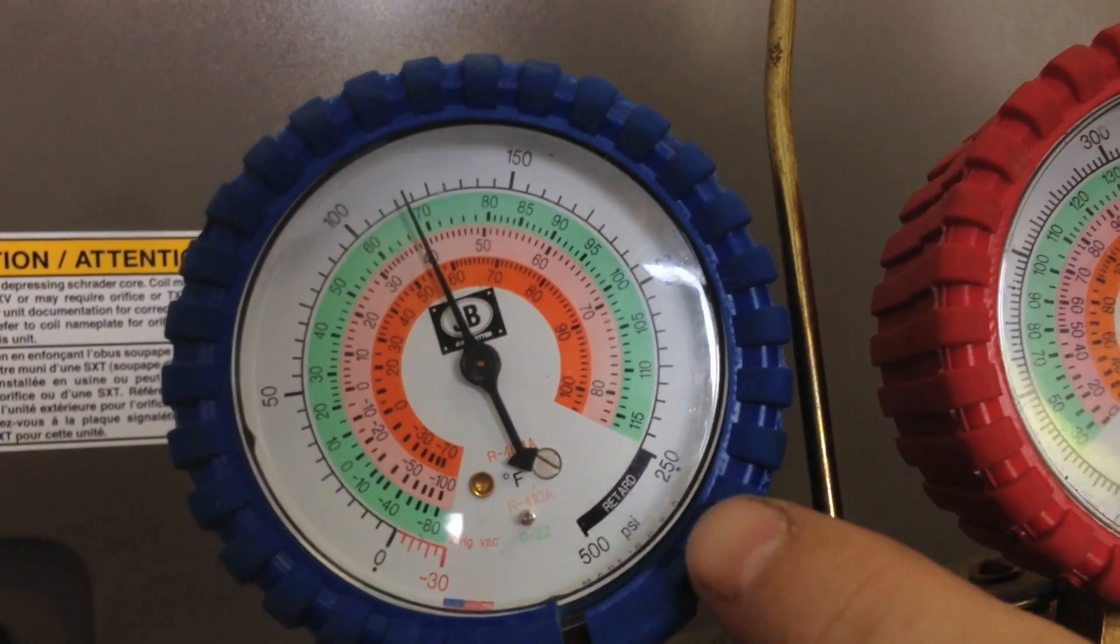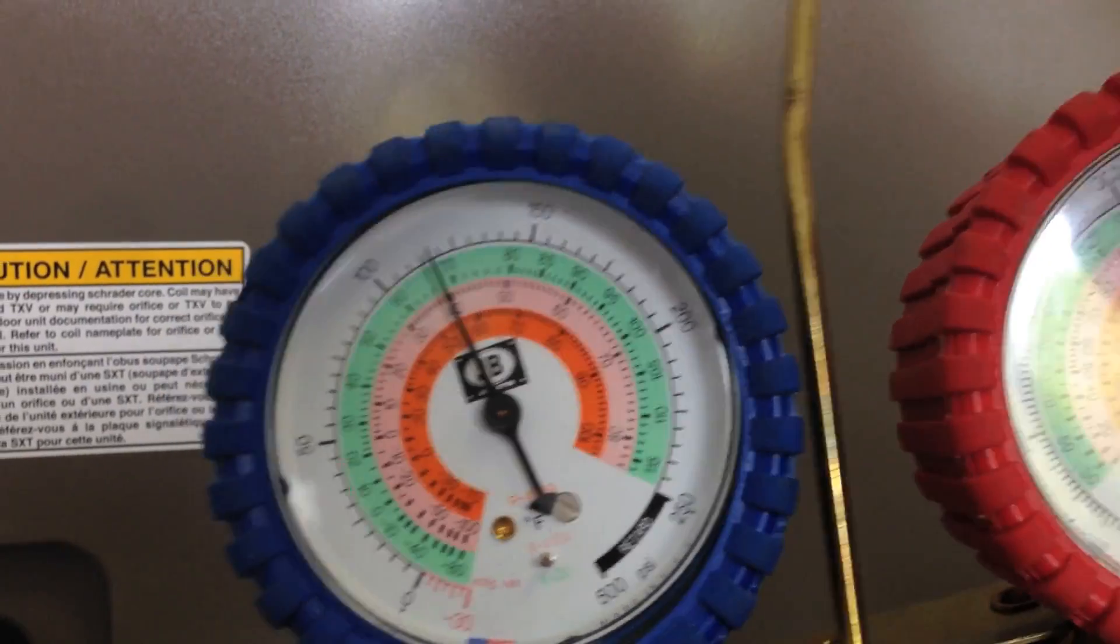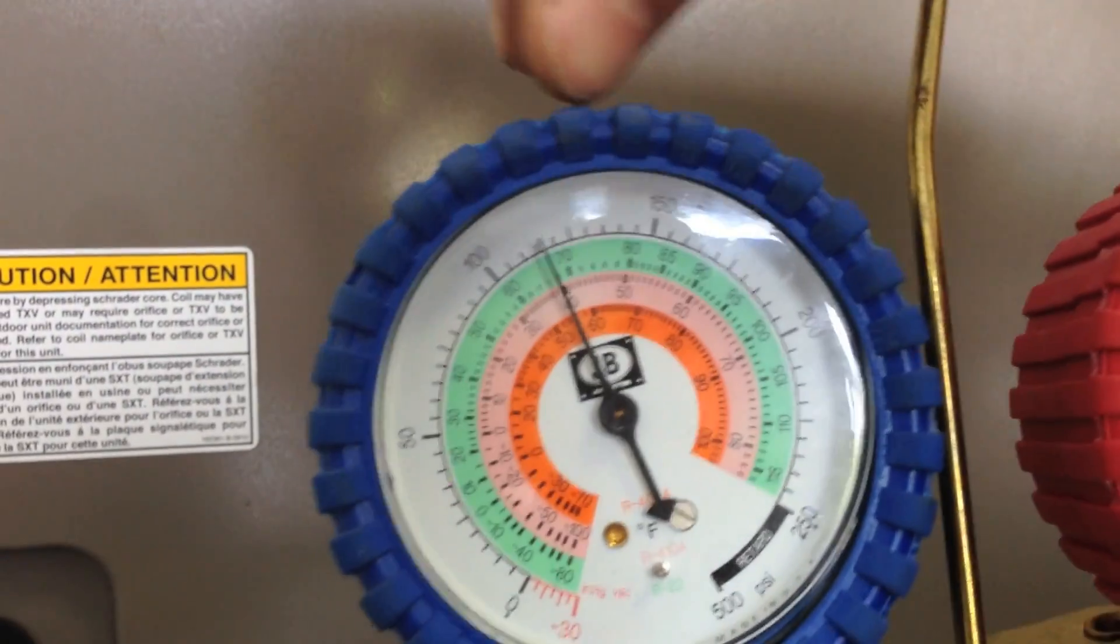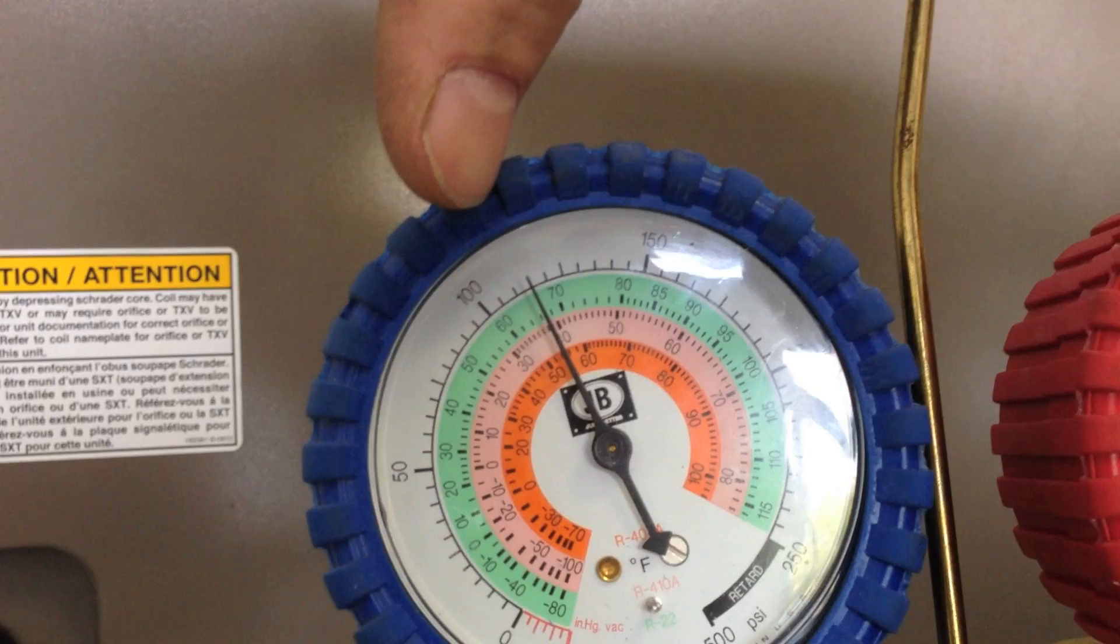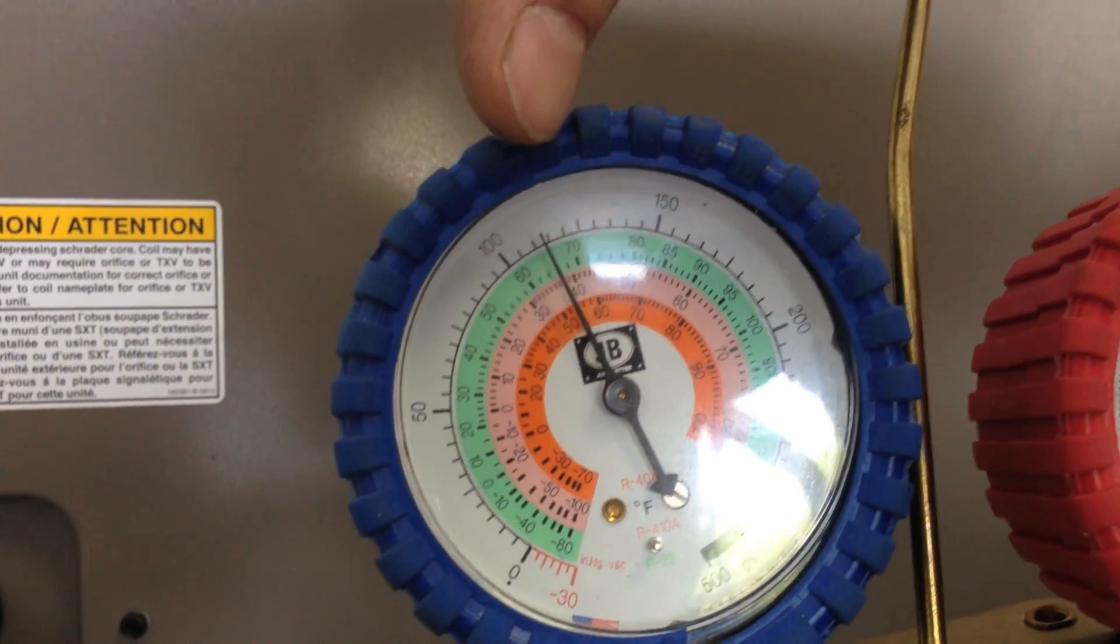So what we want to be looking at is PSI in the black. We're going to follow it all the way around to where the needle is. And on this meter, each increment is 5 PSI. So we're at 105 to 110.